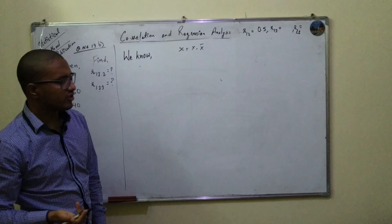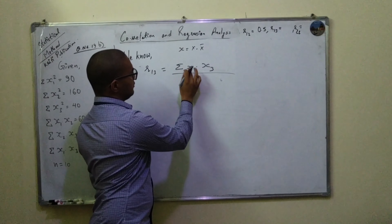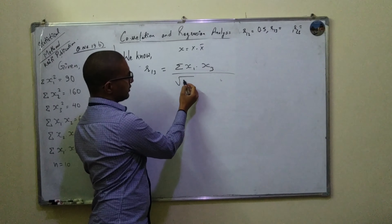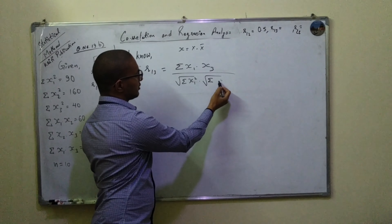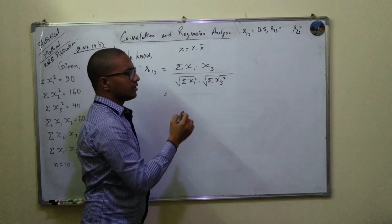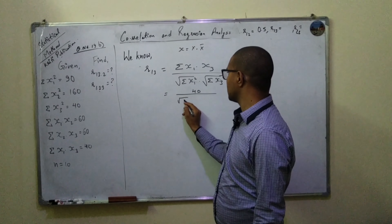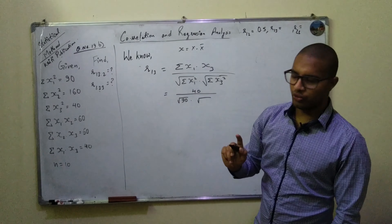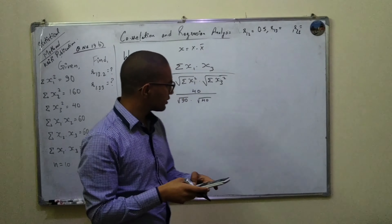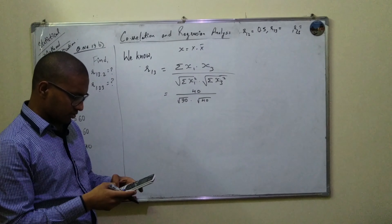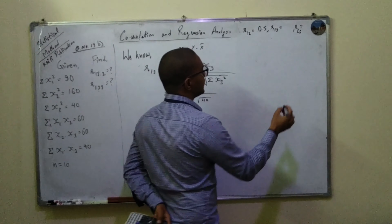Now let's solve for r13 using the same formula. r13 equals summation x1·x3 divided by square root of summation x1 squared times summation x3 squared. The value of x1·x3 is 40, x1 squared is 90, and x3 squared is 40. So r13 = 40 divided by square root of 90 times 40, which gives us approximately 0.67.